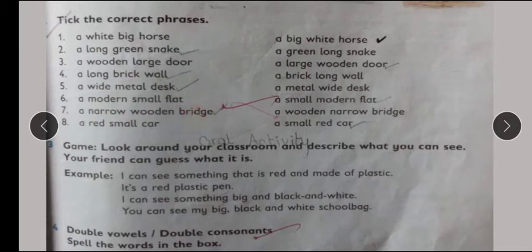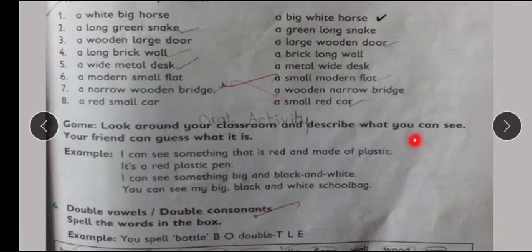A narrow wooden bridge, ya a wooden narrow bridge? A narrow wooden bridge thik hai — yianni chhota lakdi ka pull. A red small car, ya a small red car? A small red car humare pas thikha jaga. It's your oral activity — aap log isi tarah se discuss kar lije ga.